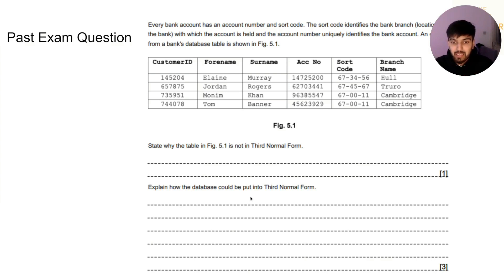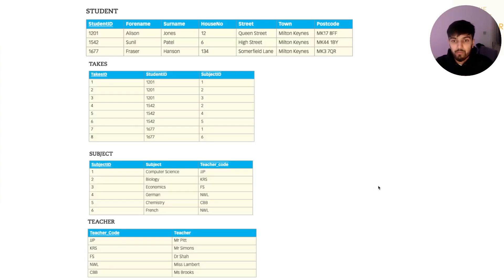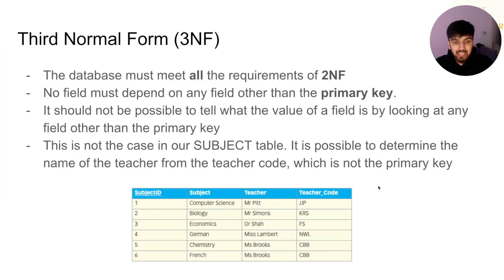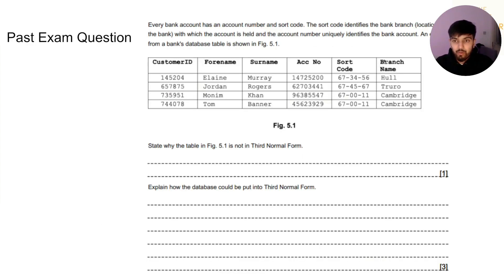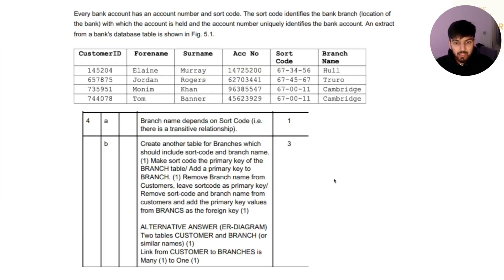Explain how the database can be put into Third Normal Form. Similar to the earlier example with teachers, we remove branch name from the customers table and create a new table which has sort code and branch name. We remove branch name from customers, leave sort code as a foreign key referencing the new branch table, with sort code as the primary key in that new table.